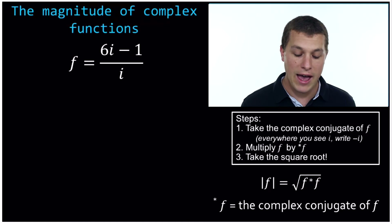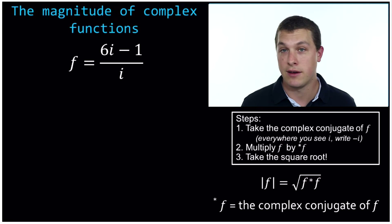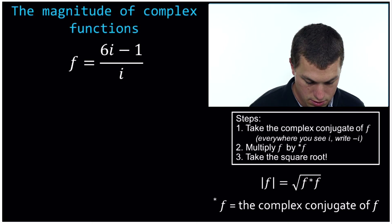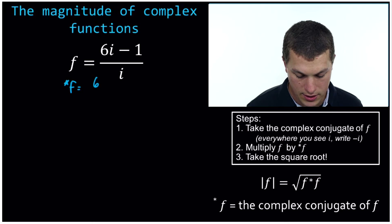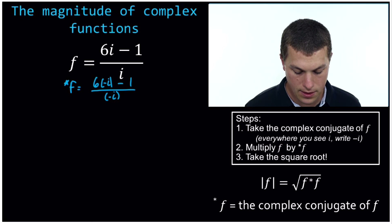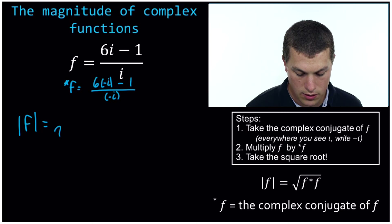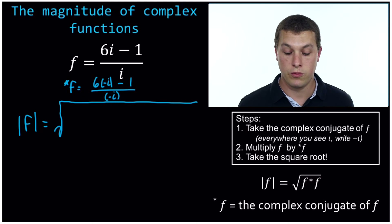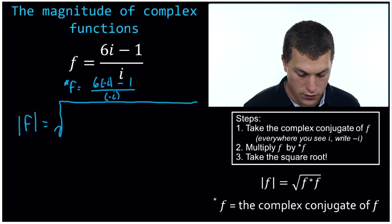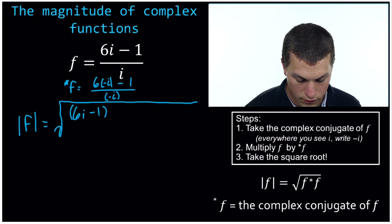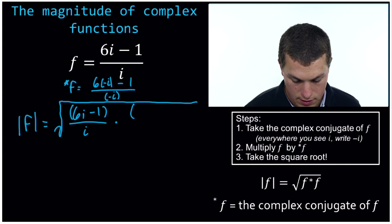One last example. Now we have 6i minus 1 over i. So there's an i in two places, but nothing really changes here — we again just find the complex conjugate. We just find any spot there's an i and make it negative: so 6 times negative i, minus 1 over negative i. That's our complex conjugate. And now we want to do the magnitude, which means we need to multiply our original complex number, 6i minus 1 over i, times its complex conjugate, negative 6i minus 1 over negative i.